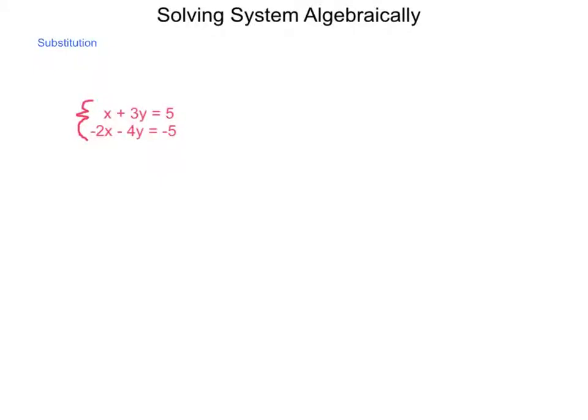Another category for solving systems of equations, once we get past graphing and tables, is to solve algebraically. Algebraic methods for solving are broken down into two types: substitution and elimination. The first we're going to examine is substitution.